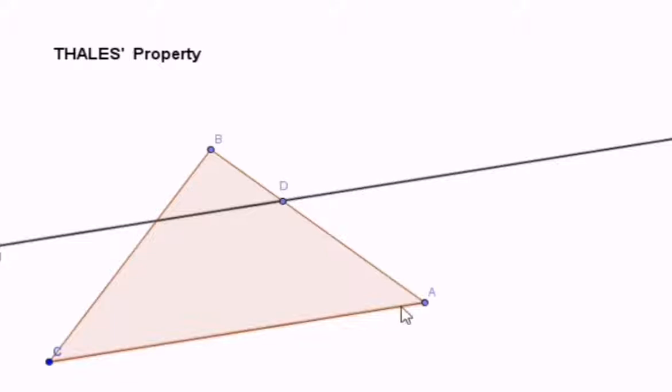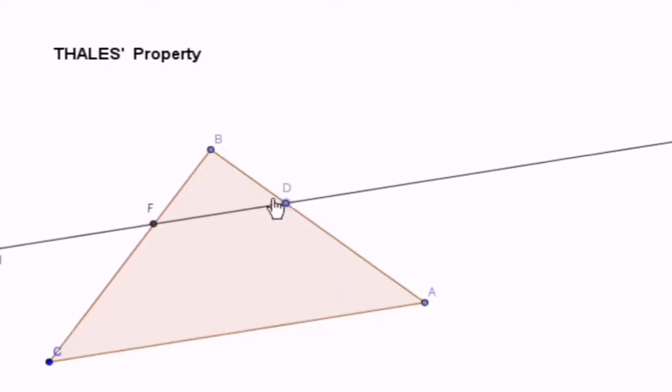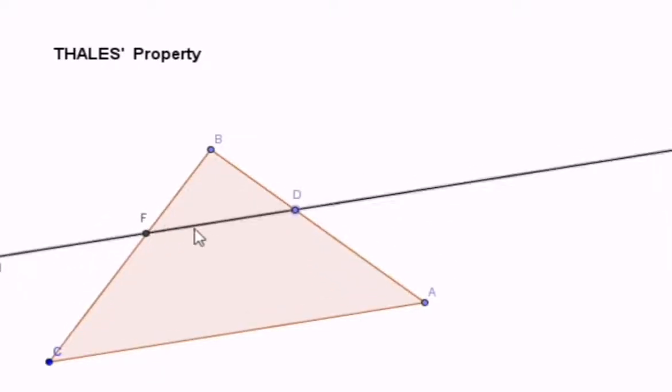This line is parallel to AC passing through D. Of course, this line will cut BC at a certain point, let's call it F. So we have that DF is parallel to AC, and D is not necessarily the midpoint. It could be the midpoint, it could be not.